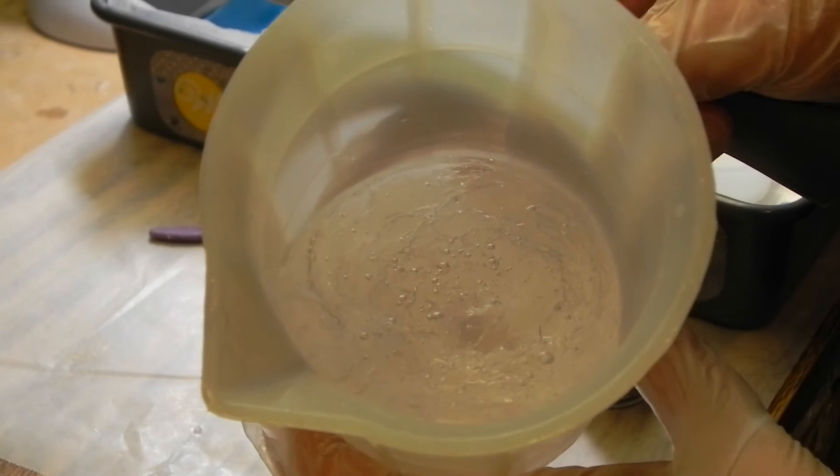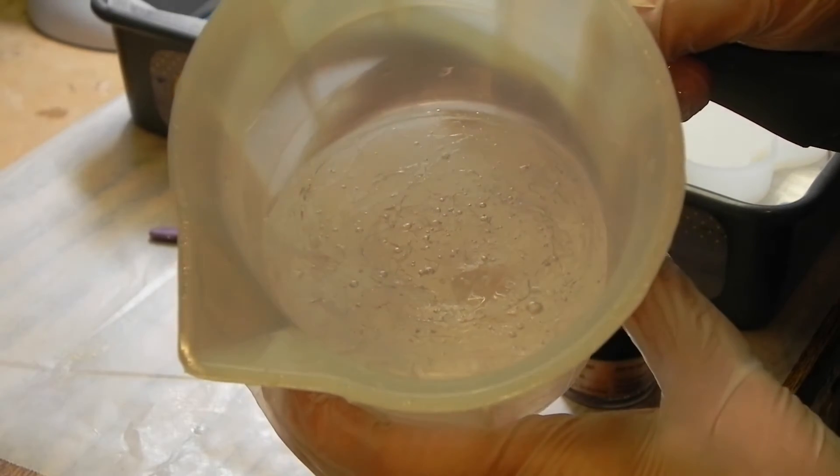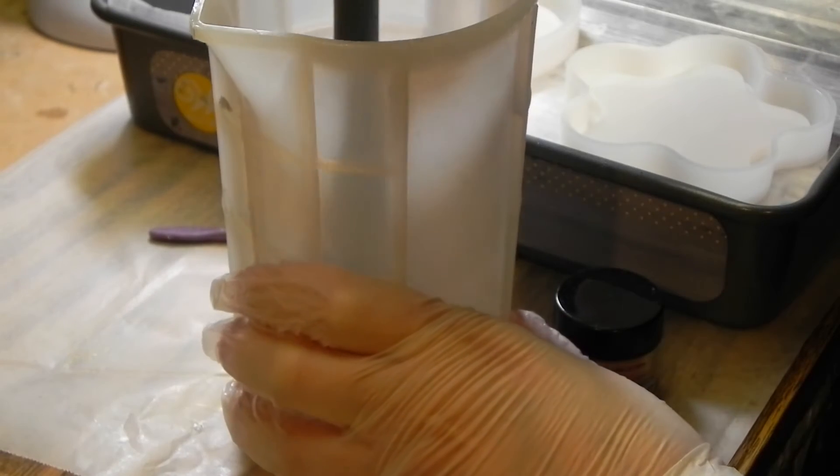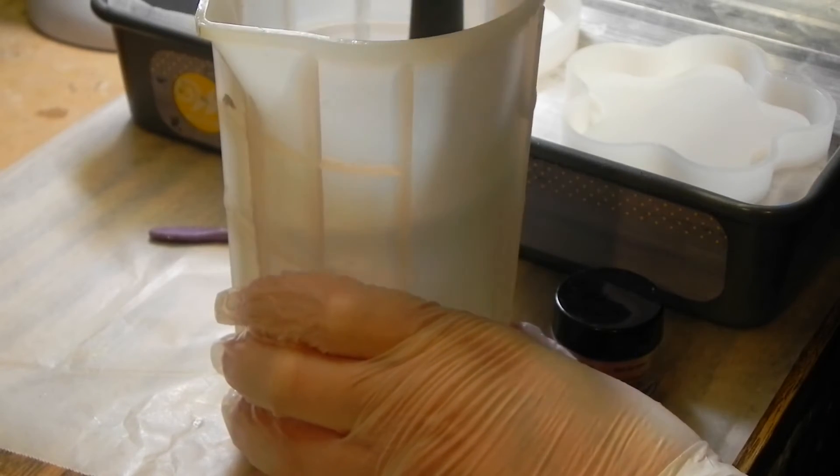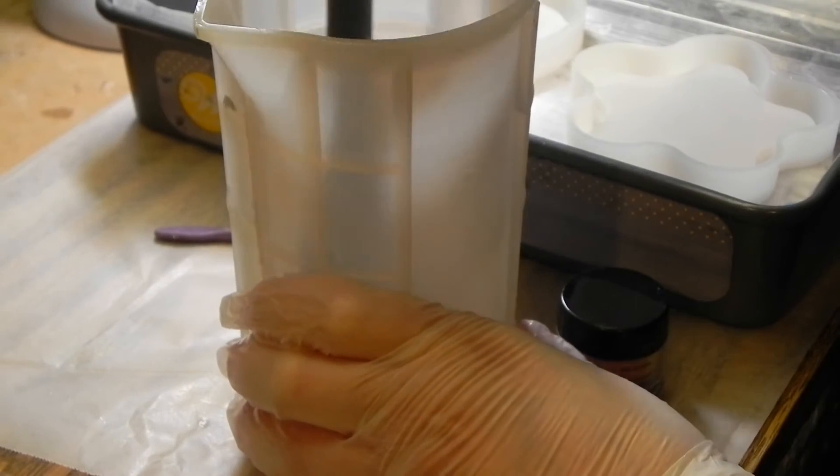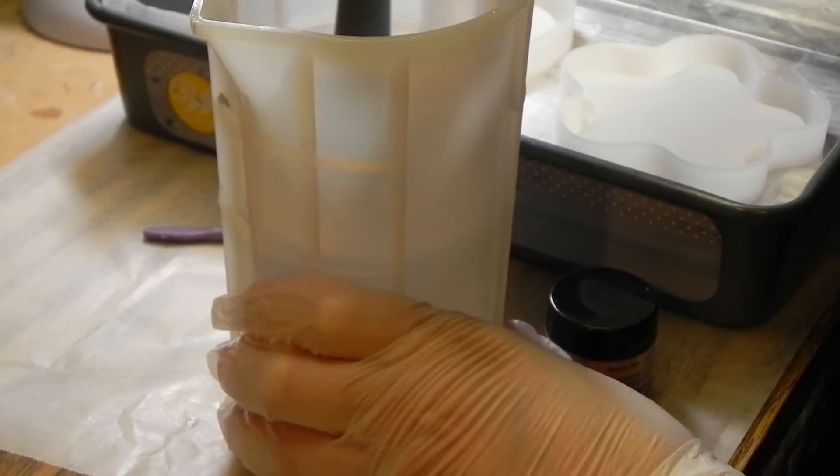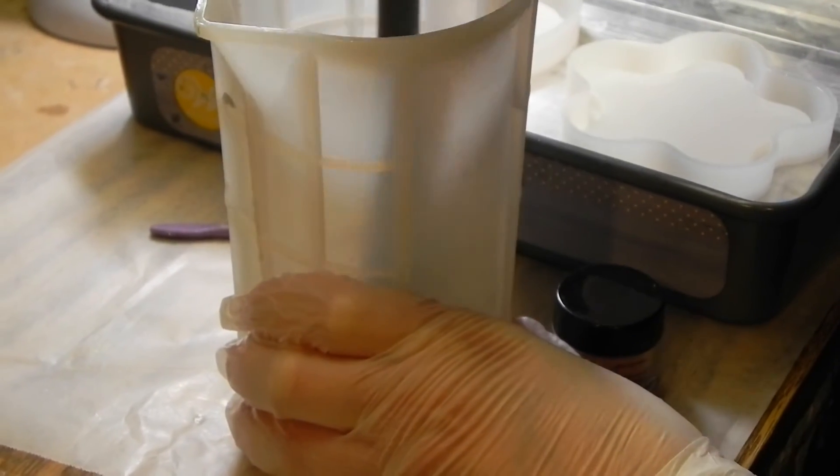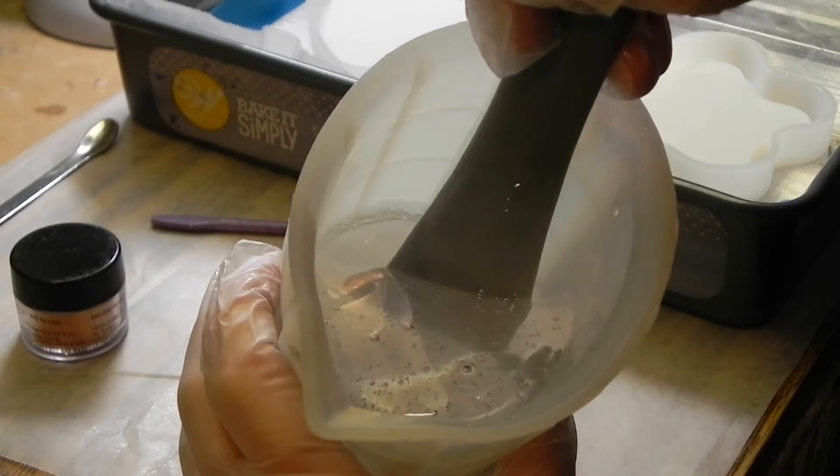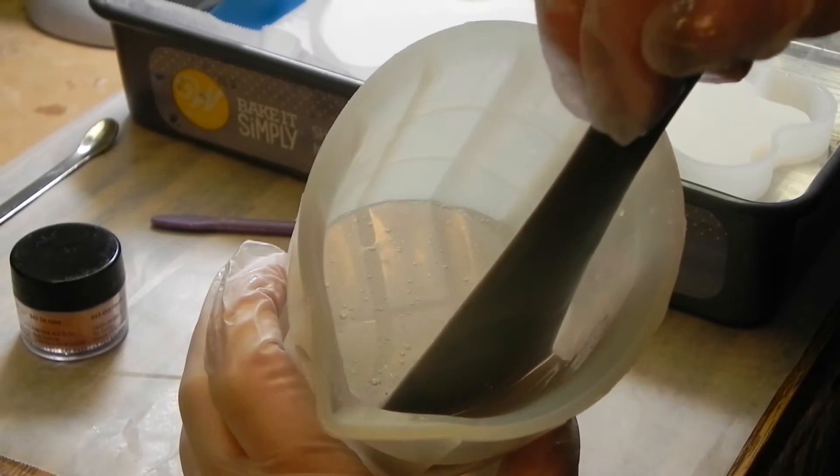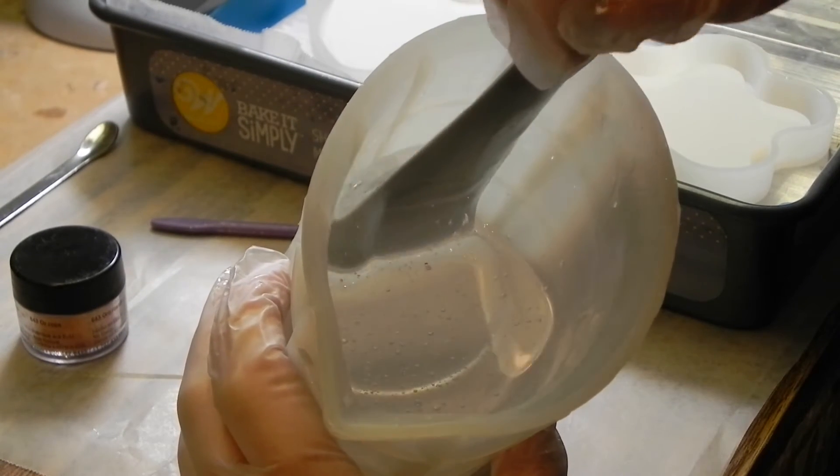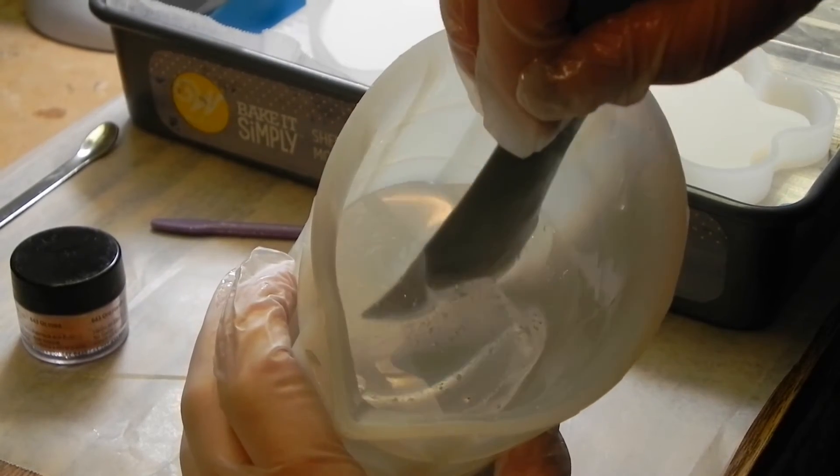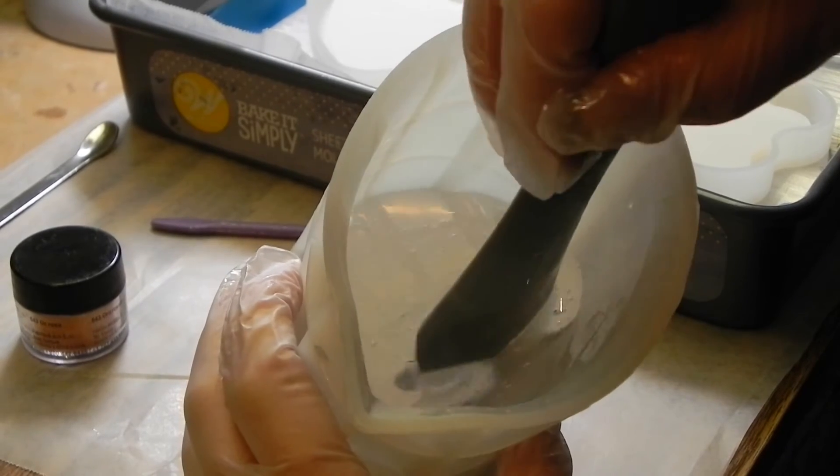The resin tends to pull in the center. This is normal. Mix slowly. Too vigorous will introduce lots of bubbles. Use circular motions, ensuring to scrape the sides and bottom well. The mixture will get cloudy. Don't panic. Keep stirring until it is clear and there are no striations or ribbons in the mixture. This usually takes several minutes. It's better to err on the side of mixing longer than to rush it.